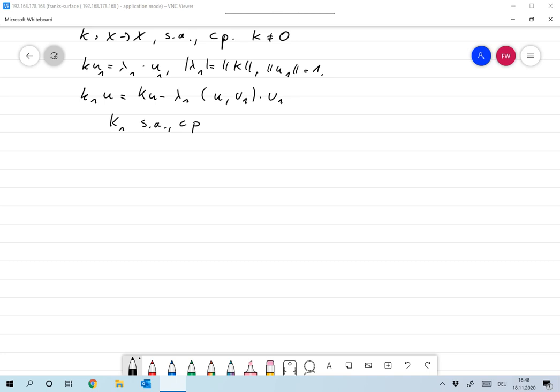Now let me tell you what k₁u₁ is. k₁u₁ is ku₁, which is λ₁u₁ minus λ₁ scalar product u₁ on u₁ times u₁. And since we assume that the norm of u₁ was 1, this is exactly the same, it is exactly 0.